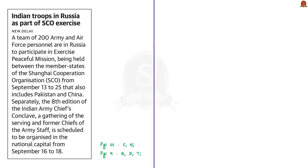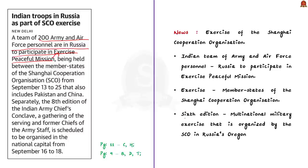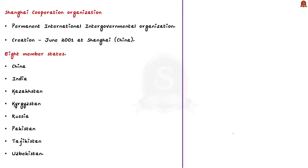Now let us take up this news article about an exercise of the Shanghai Cooperation Organization. An Indian team of 200 army and air force personnel are in Russia to participate in Exercise Peaceful Mission, being held between SCO member states. This is the sixth edition of this multinational military exercise, organized by the SCO in Russia's Orenburg. Let us briefly see about the SCO: the Shanghai Cooperation Organization is a permanent international intergovernmental organization whose creation was announced in June 2001 at Shanghai.